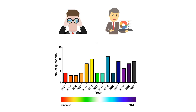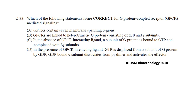Before we start, I want to let you know that all the relevant cell signaling concepts you need to know for solving these questions are available on my channel. Go and check my cell signaling playlist — the link is given in the end screen. Here is the first question, which is from IIT JAM Biotechnology 2018, and it asks: which of the following statements is correct for G protein coupled receptor signaling?